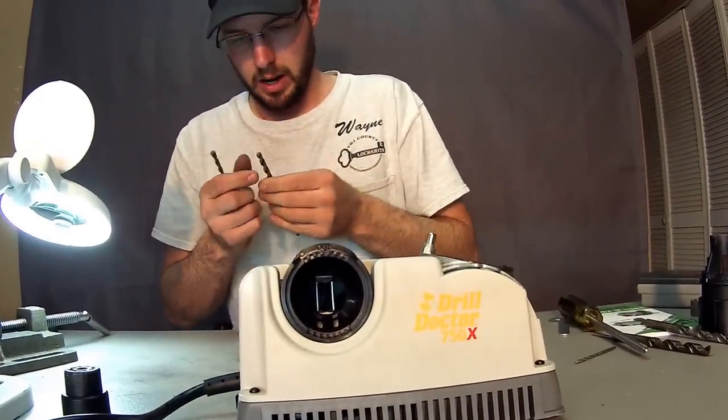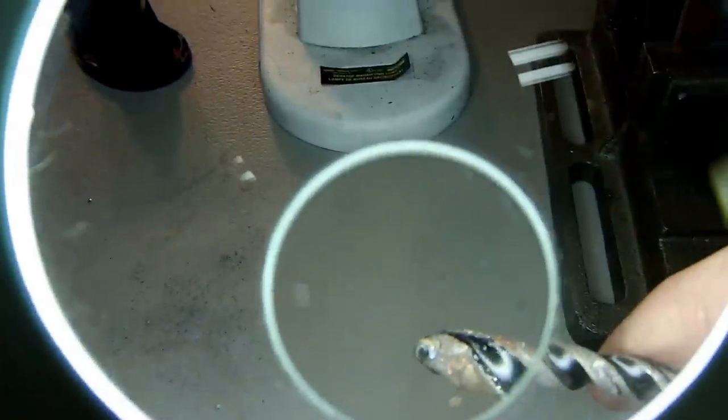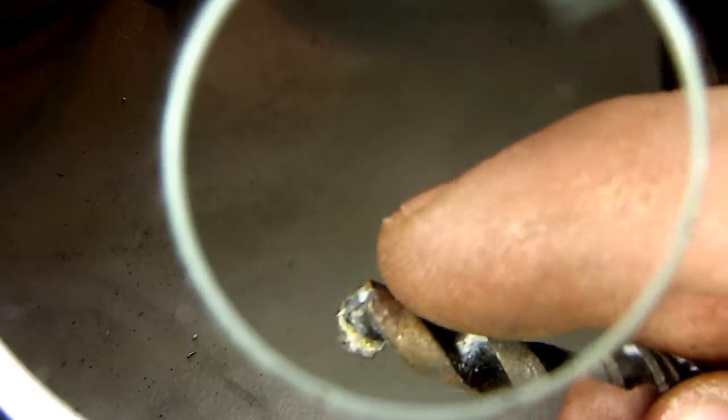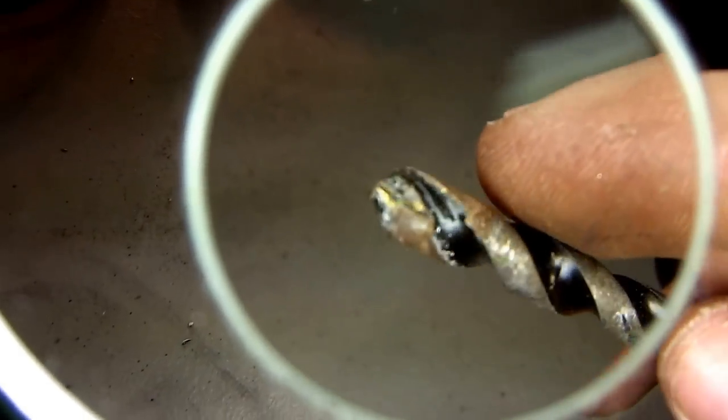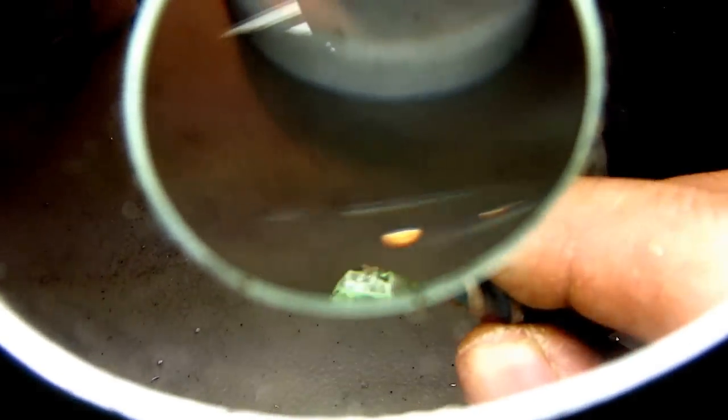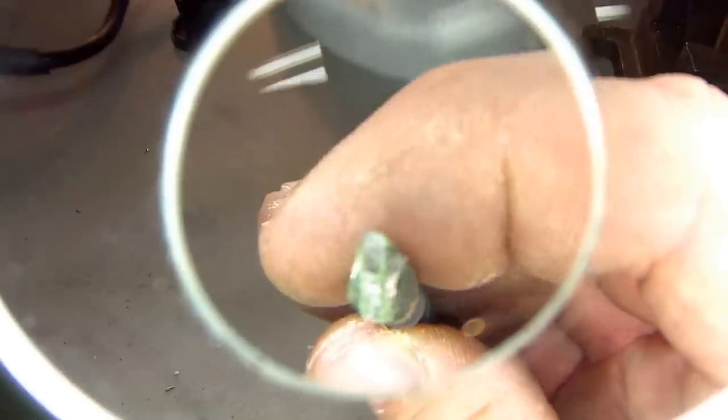These masonry bits right here are pretty chewed up and toasted. Take a look here at what we got. You can see how chewed up that carbide is on there. These are just a carbide tip, the rest of this is just regular steel. But you can see all the damage to the point, and the damage to the edges. These Bosch bits are normally pretty good. You can see a chunk missing out of that right there. This just happens to your drill bits.